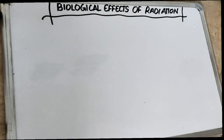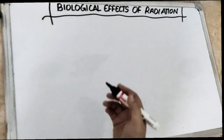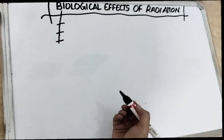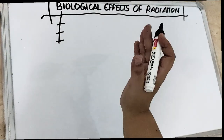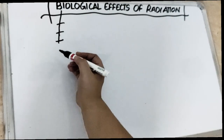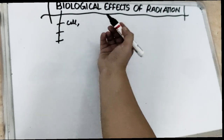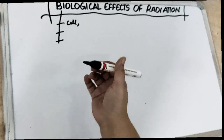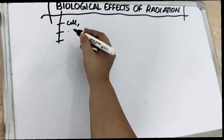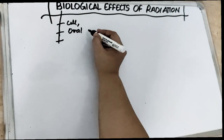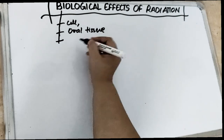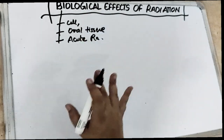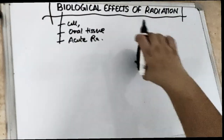Welcome back to our channel. In this video we are going to talk about the biological effects of radiation, and we are going to cover it in three parts. The first part will cover the effects on the cell at the molecular level, chemical level, and DNA level. The second part will cover effects on oral tissues, and the third part will cover the whole body, including acute radiation syndrome.